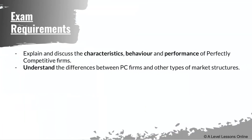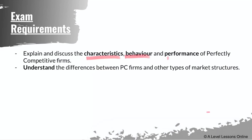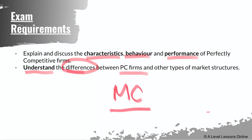All in all, this chapter is straightforward. You need to be able to explain and discuss the characteristics, behavior, and performance of PC firms — and this same requirement applies to all four market structures. You also need to understand the differences between PC firms and other market structures, especially MC firms. MC firms are the real-life equivalent — things like hawker stores and food courts are actual MC firms. PC firms don't exist in the real world, but MC firms do, and they follow a different set of rules which I'll cover in the next video.